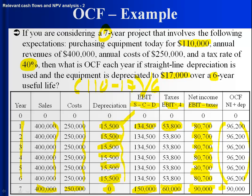What's interesting is that if you look at net income alone, year 7 looks like the best — it has the highest net income. But we're more sophisticated than that. We recognize that cash flow is what's important, and operating cash flow in year 7 is actually the worst. Net income is lower in years 1 through 6 because of depreciation, but that saves us on taxes — there's $6,200 less in taxes per year, which is why cash flow is $6,200 higher in those years.